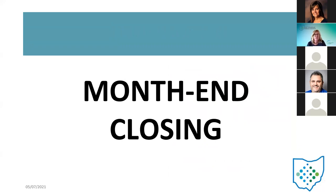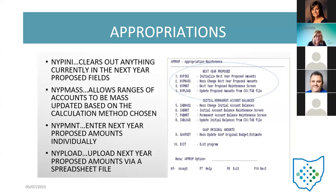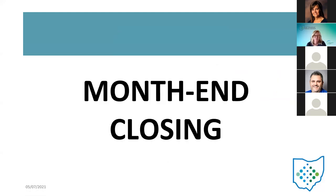Those are some of those preliminary things that can be done ahead of time. If they don't use the NYP options ahead of time, that's fine — once they close out for the fiscal year and they're in July, they can use the IV options to enter in that information. Any questions regarding the preliminary steps?